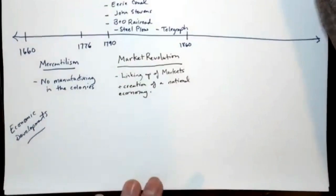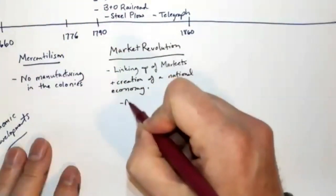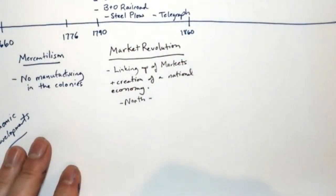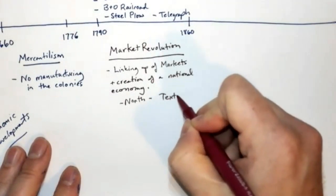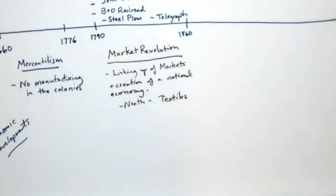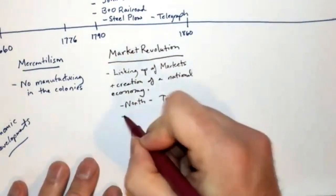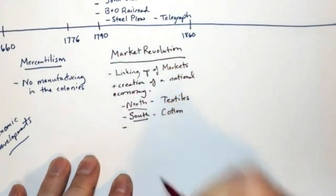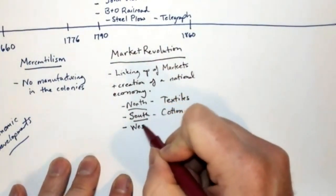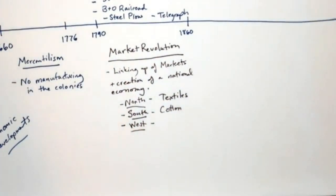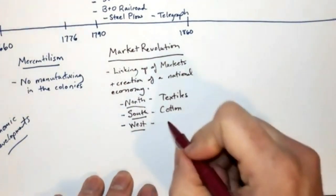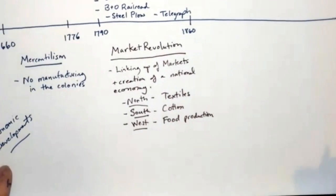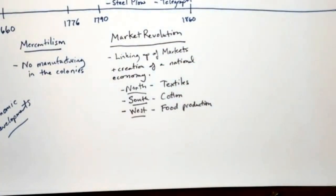Each part of the country is starting to specialize in a specific part of the market. The North, for example, becomes the center of the earliest industries in America — America is starting the process of industrializing — and the North is going to produce textiles, which are primarily manufactured cloth goods. The South, especially because of the cotton gin, is going to become the center of cotton production. And out west, because of John Deere and the creation of the steel plow and McCormick and his mechanical reaper, we're going to see large-scale food production. Each region is specializing in something different, and they are producing things for the country as a whole.